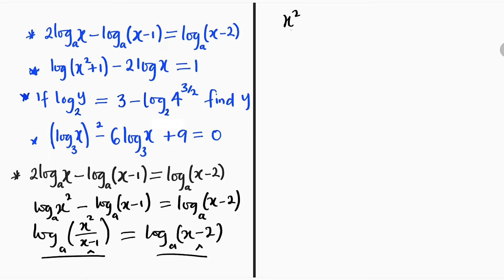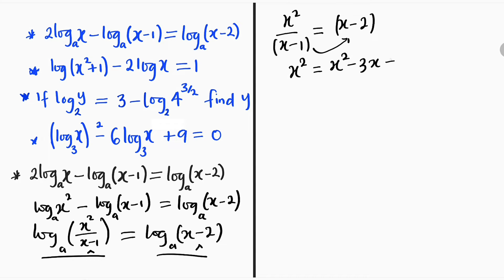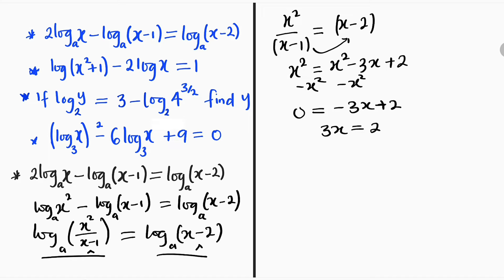Therefore we can equate the terms under parentheses. We can now say that x² divided by (x minus 1) is equal to x minus 2. We can cross-multiply: x² is equal to — if you multiply this by this — you obtain x² minus 3x plus 2. Subtract x² from both sides. We have 0 on the left and on the right we have negative 3x plus 2.